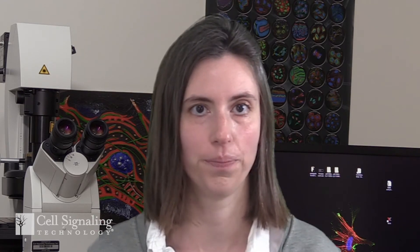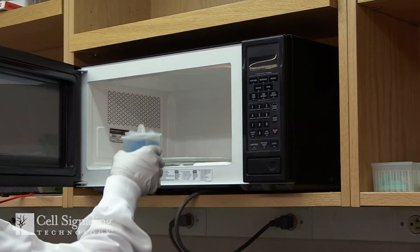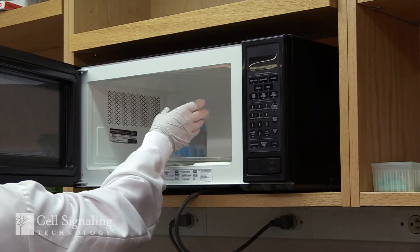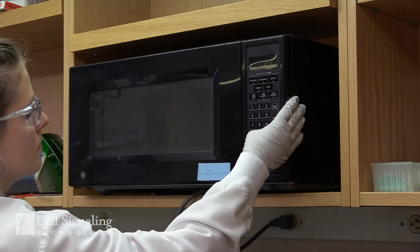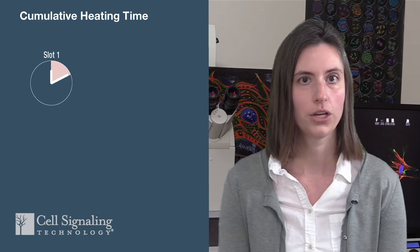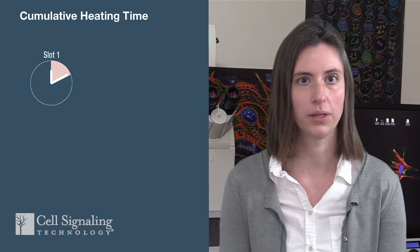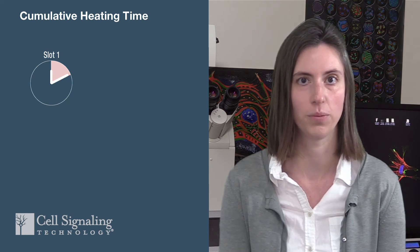To illustrate why this may be a problem, let's consider a multiplex panel with six labels and look at the epitope for the first label in your panel compared to the last epitope. Before the first labeling slot, the sample is subjected to an antigen retrieval step by boiling in a microwave for 10 minutes. This helps the antibody to access its epitope in the sample, and it's also routinely used in single stain IHC. So the epitope for your first labeling slot will experience 10 minutes of heat time by the time its antibody incubation step occurs.